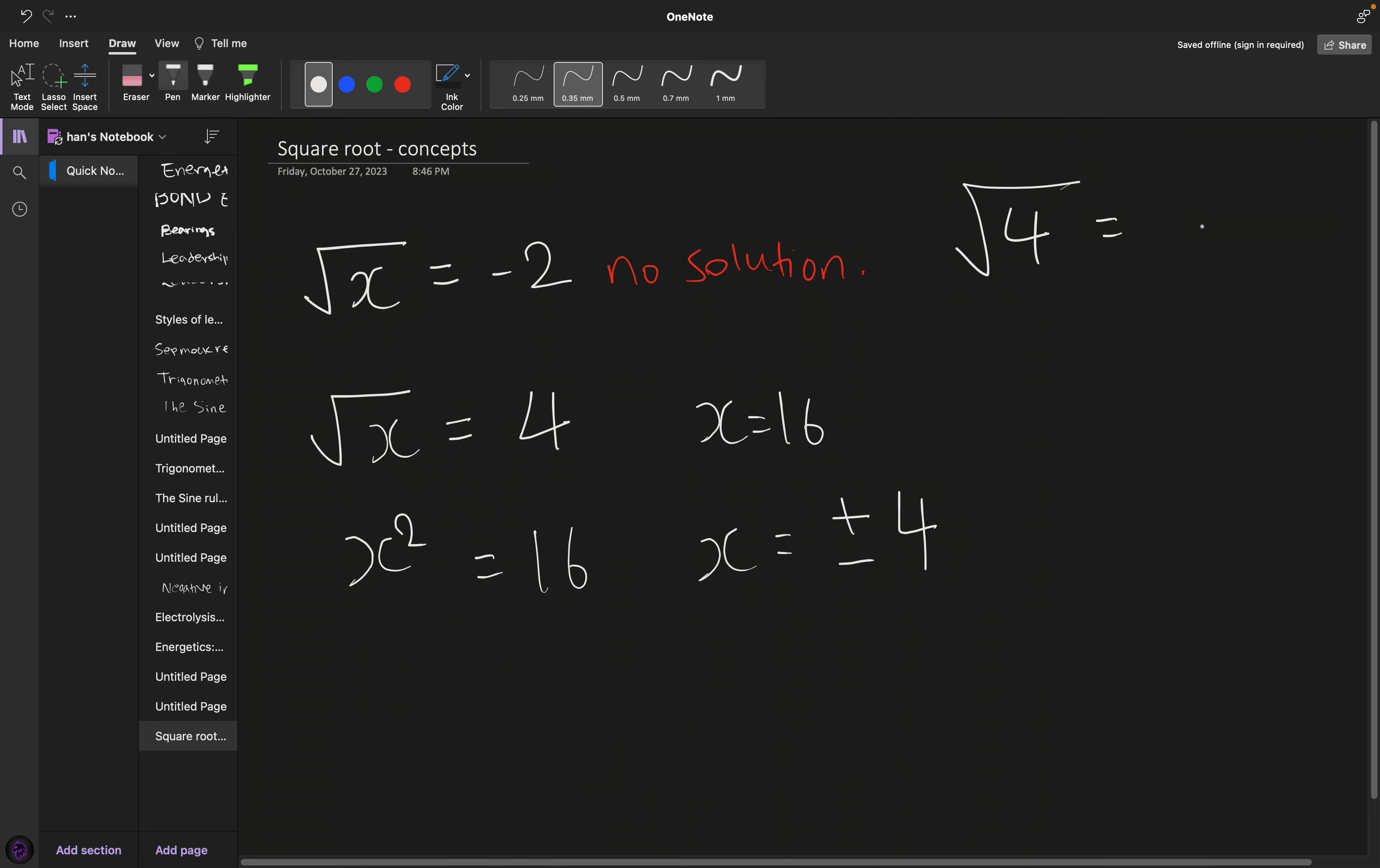Because the square root of 4 would theoretically give minus 2. But no, that cannot happen. It's just two numbers that multiply to give 4. That's going to be 2 times 2, or it could be negative 2 times negative 2.